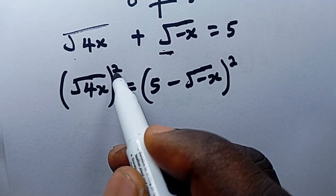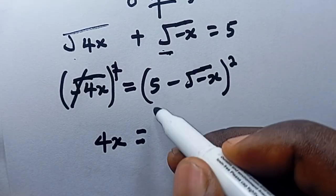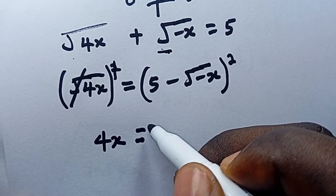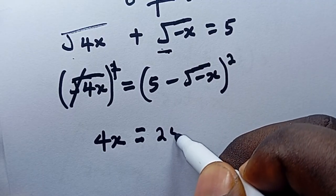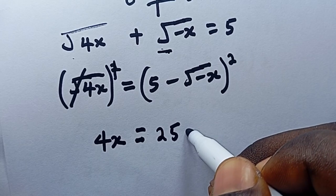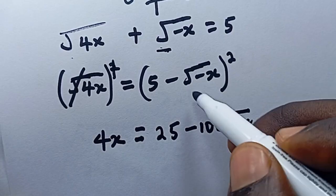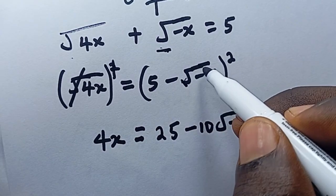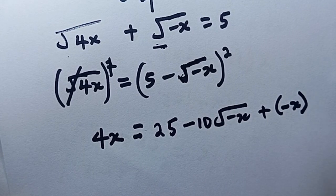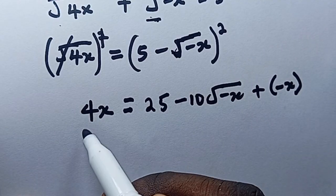When we square both sides, the left side simplifies to 4x. Expanding the right side: 5² is 25, plus 2 times 5 times (-root(-x)) which gives -10·root(-x), and then the square of root(-x) gives -x.